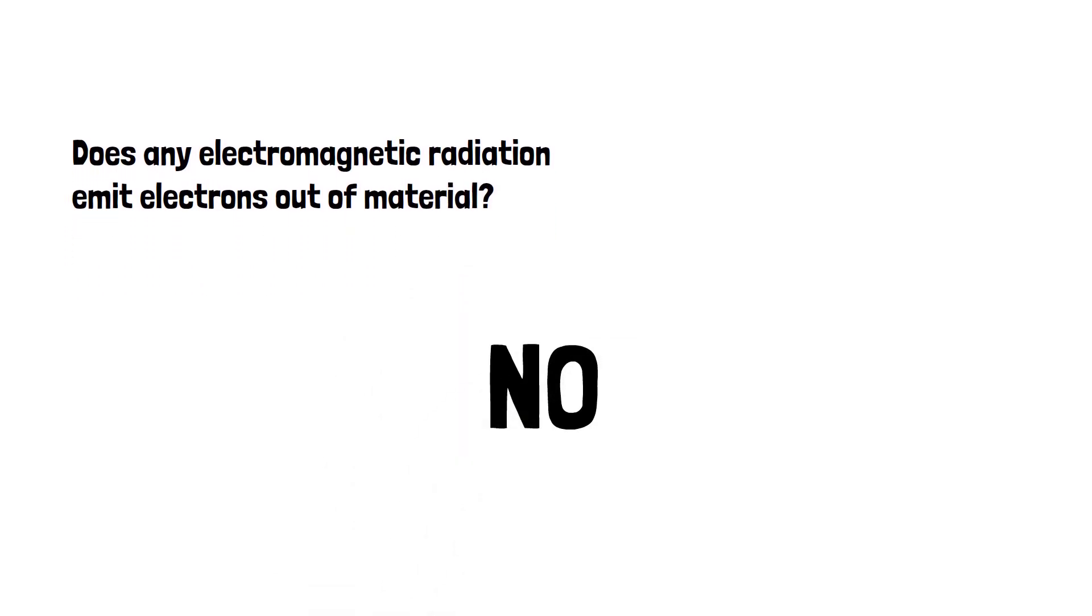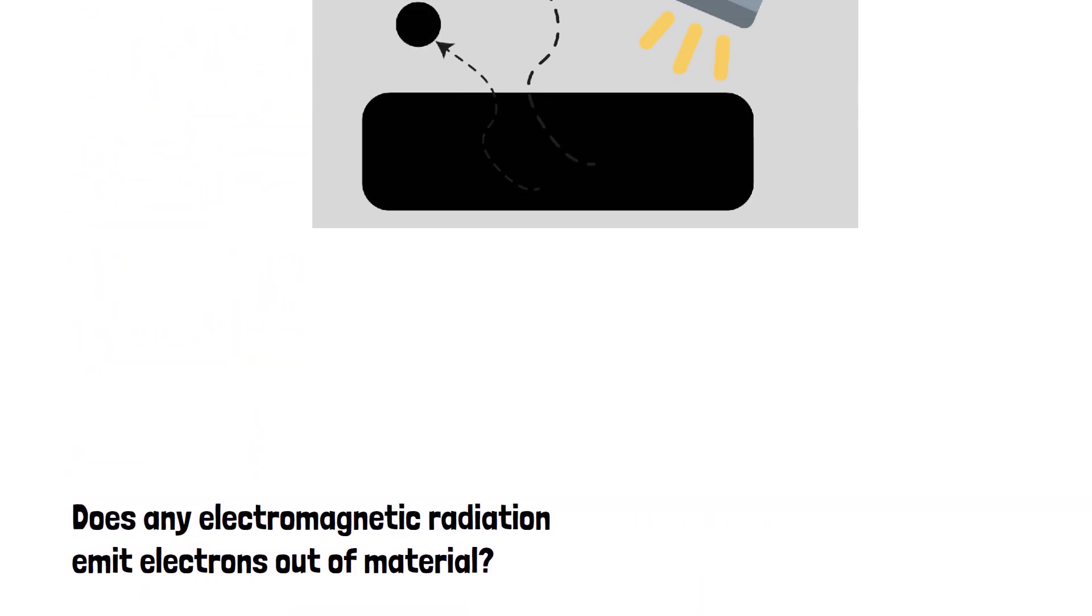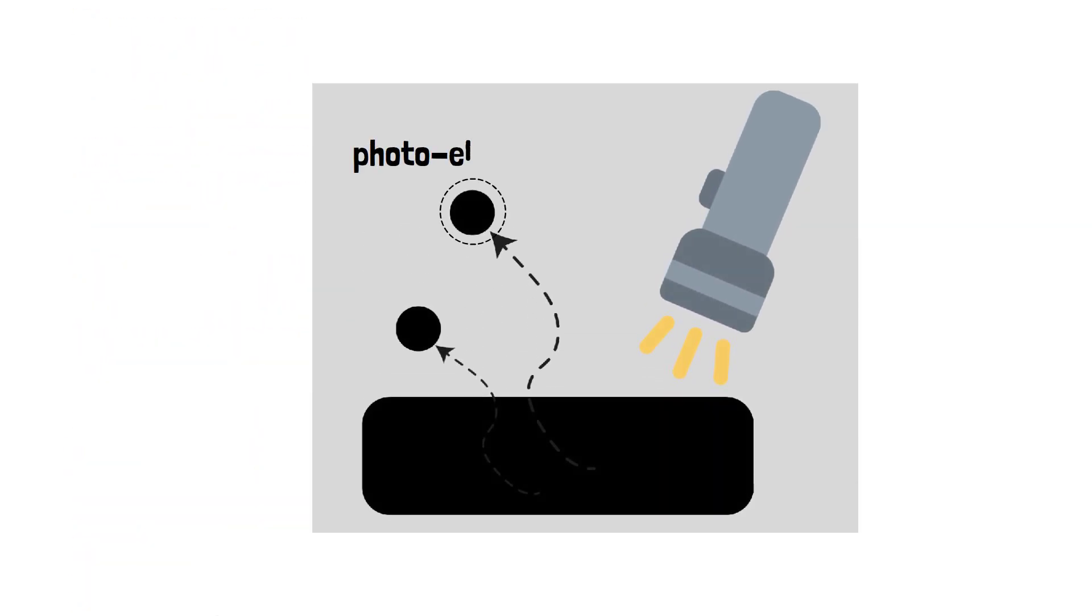There is a minimum requirement. The requirement is called threshold frequency. It's a minimum frequency below which no electron gets ripped from the material. And the electron that gets ripped up from the materials is called a photoelectron.